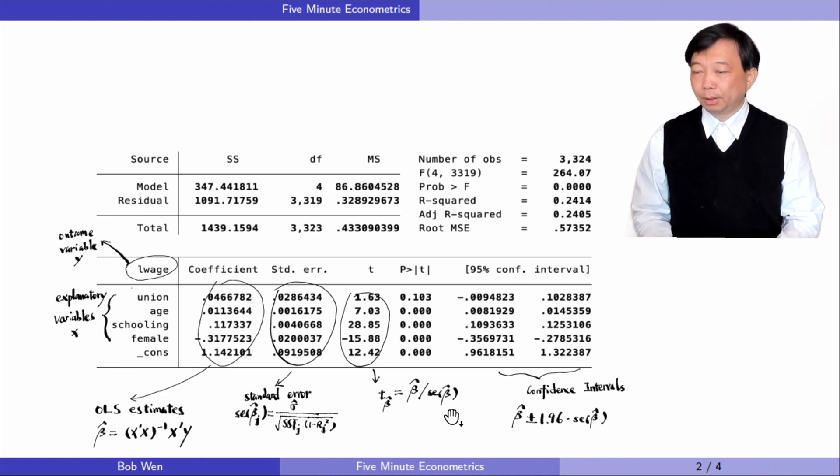For example, the 5% critical value for a two-sided test with infinity degrees of freedom is 1.96. The t statistic for the variable schooling is 28.85, which is larger than 1.96. So we reject the null hypothesis and we conclude that on average education is statistically significant or statistically significantly different from zero at the 5% level after holding other variables in the model fixed.